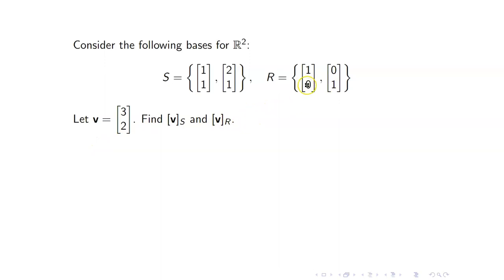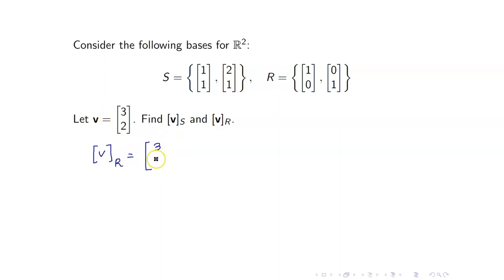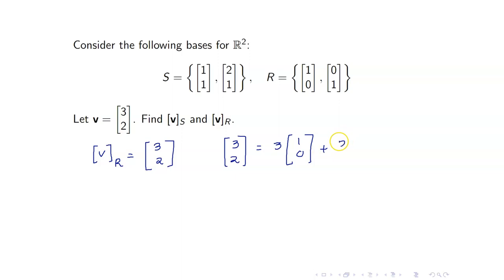Let us first start with the coordinate vector of V with respect to the basis R. Note that R is the standard basis for R2, so therefore V_R is just the column vector [3, 2] itself, because [3, 2] is equal to 3 times [1, 0] plus 2 times [0, 1].